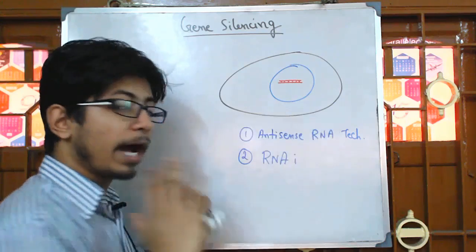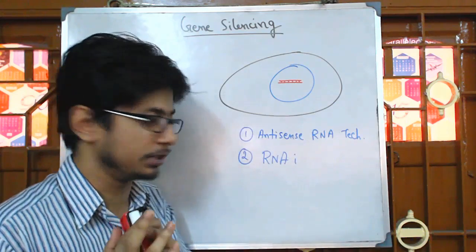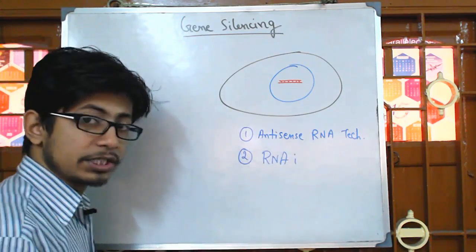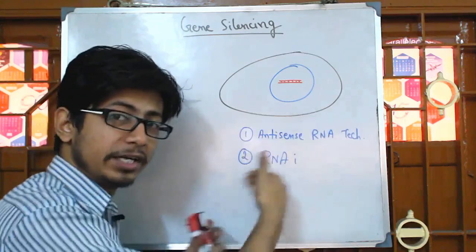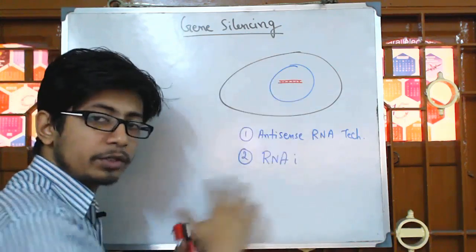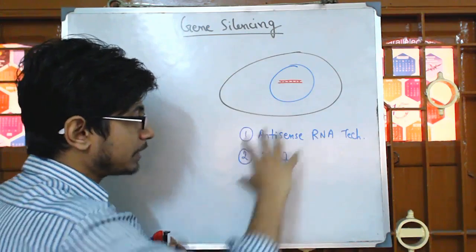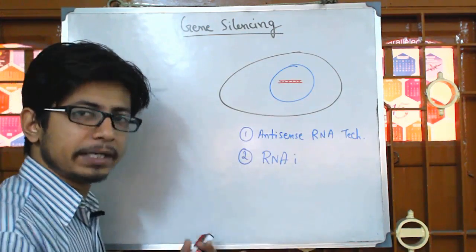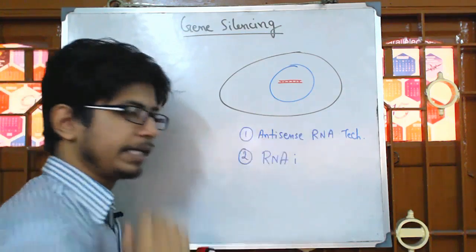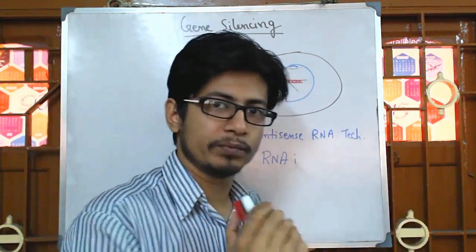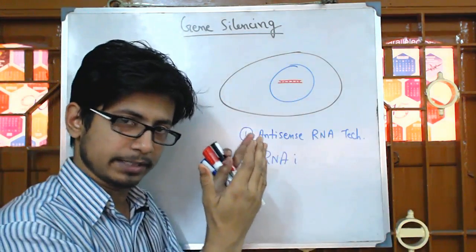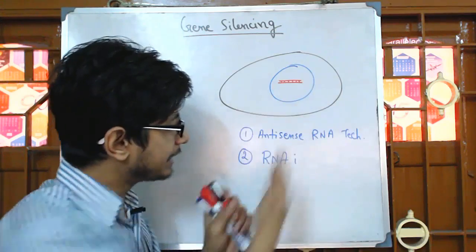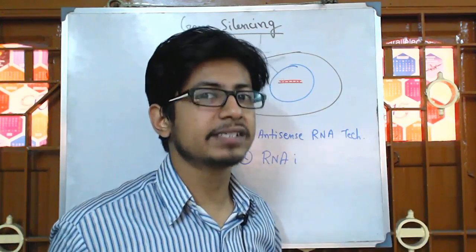In this video, I am going to give an overview of how we go for gene silencing using RNAi technologies, and also focusing on the antisense RNA technology. Both techniques have the same goal: we have a target DNA — the target gene — and they have to degrade that DNA.